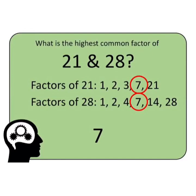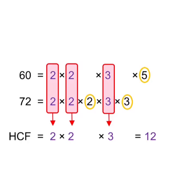Now we will find HCF by the prime factorization method. We find the prime factors of 60 and 72. Prime factors of 60 are 2 × 2 × 3 × 5, and prime factors of 72 are 2 × 2 × 2 × 3 × 3. The common prime factors of 60 and 72 are 2 × 2 × 3. Multiplying these gives 2 × 2 × 3 = 12, so the HCF of 60 and 72 is 12.